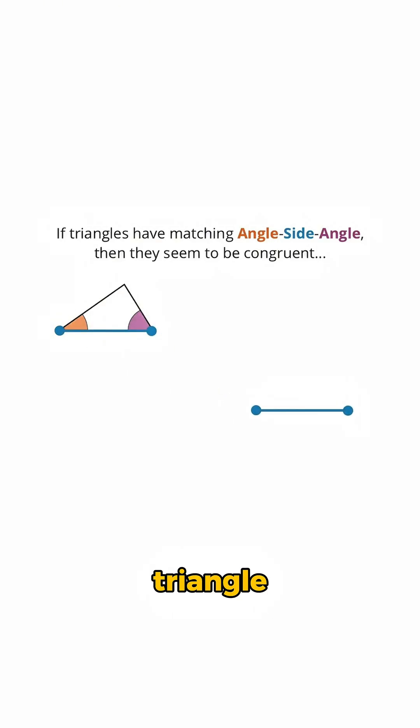First, let's start with the labeled side of our triangle. Now, there are two ways we can have an angle over here with the same measure as this orange angle in our original triangle.